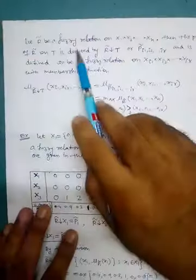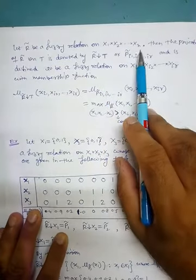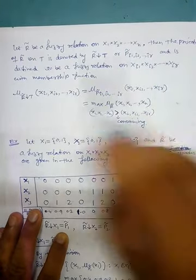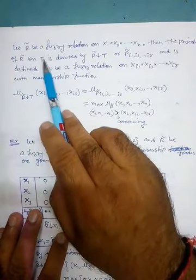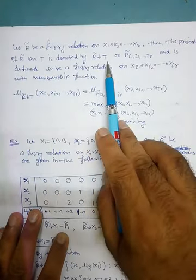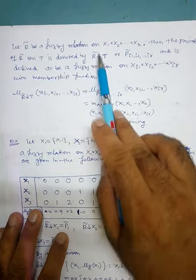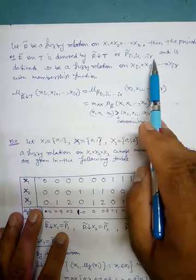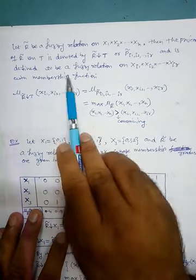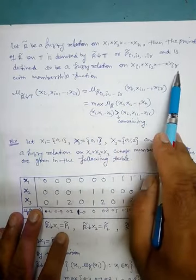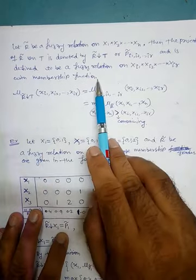Let R be a fuzzy relation on X1 cross X2 cross ... cross XN. Then the projection of R on T, which is a sub-collection of S, is denoted by PR downward T or P_{i1, i2, ..., iR}, and is defined to be a fuzzy relation on Xi1 cross Xi2 cross ... cross XiR with the corresponding membership function.